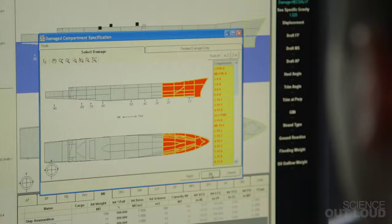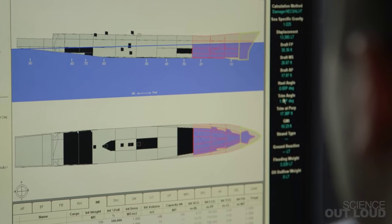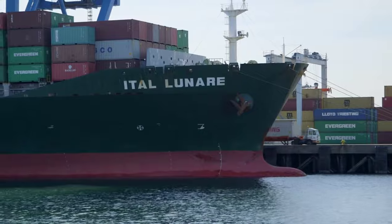Now, ships are more complicated than this box. Naval architects have to think about where to subdivide the ship, the shape of the hull, and equipment that goes into the compartments.